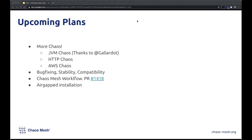One key focus of our work is bug fixing, stability, and compatibility. Since Chaos Mesh controls the blast radius based on the container, and most cloud providers have customized Linux kernels, we are testing Chaos Mesh on cloud-hosted Kubernetes environments such as EKS and GKE. We are still enriching the list of cloud providers that Chaos Mesh works well with.